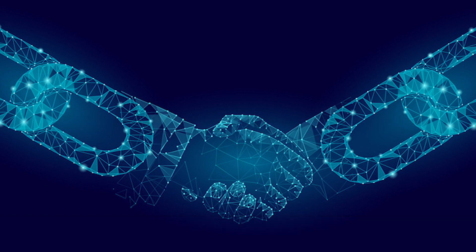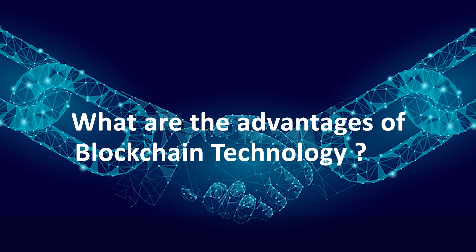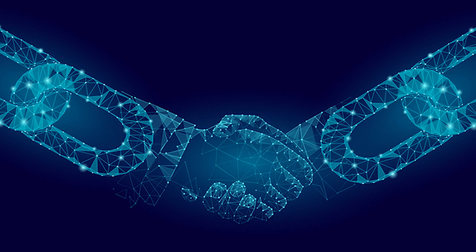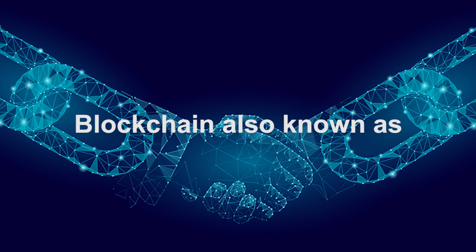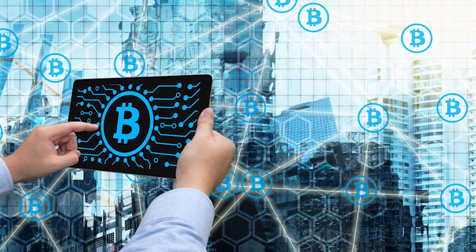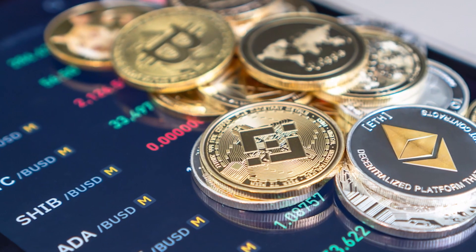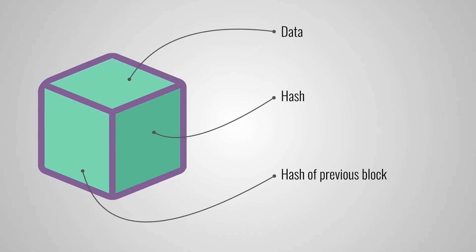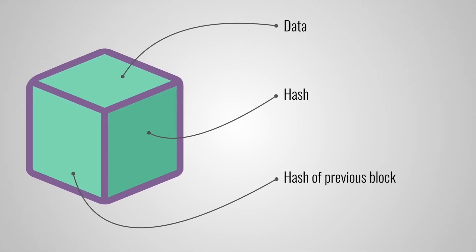Why is blockchain important? Which blockchain type is the best? What are the advantages of blockchain technology? What is blockchain technology? Blockchain, also known as distributed ledger technology or DLT, uses a decentralized network and cryptographic hashing to make the transaction history of any digital asset immutable and transparent.